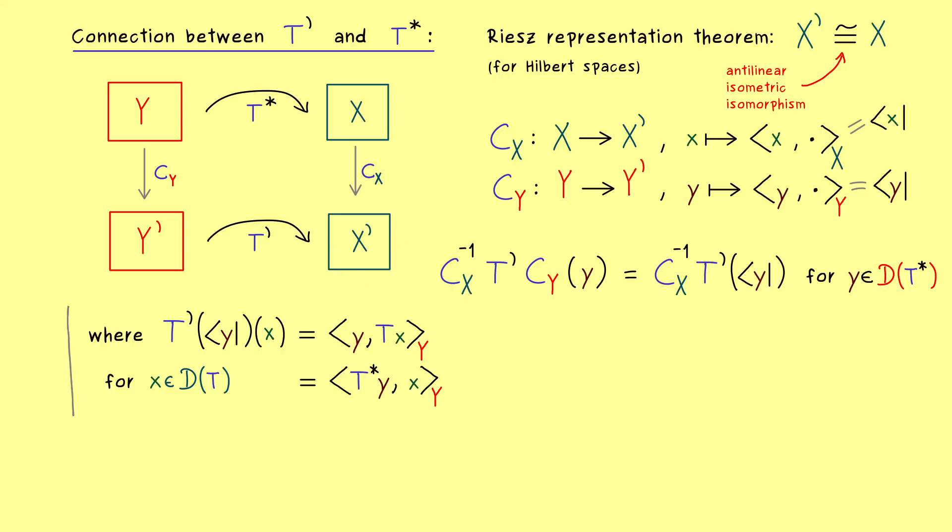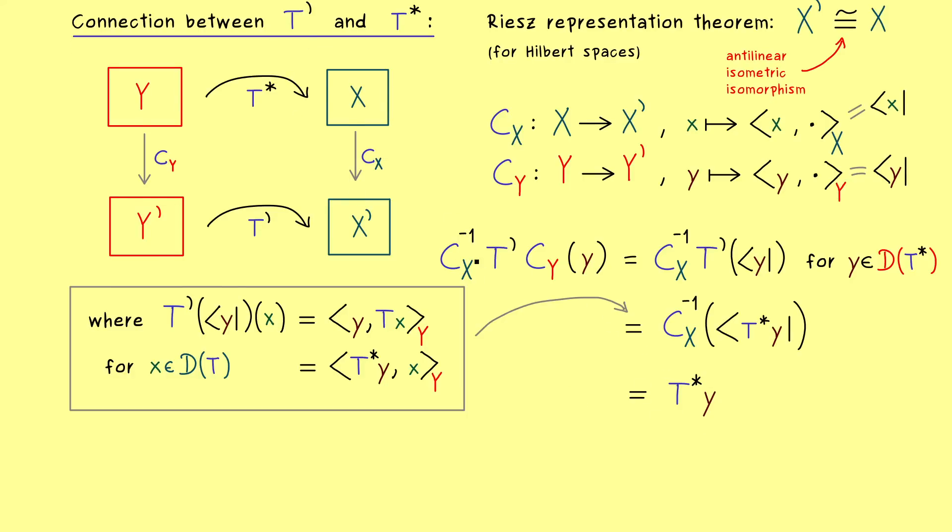In other words, this is exactly what we want to use on the right-hand side now. This means our T' is gone and now we have T* in the equation. Namely, in the short notation we can just write T*y. And obviously this one we can immediately translate by using our antilinear map C_X. Namely, we get immediately our T*y. Hence, our connection is now completely clear. T* is simply given as C_X^{-1} T' C_Y.